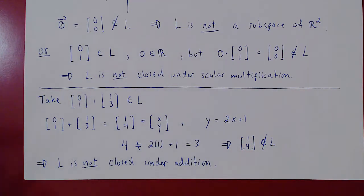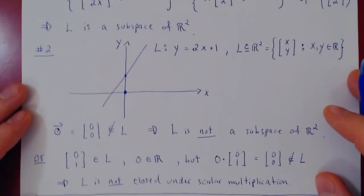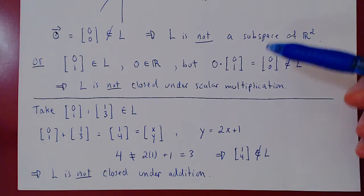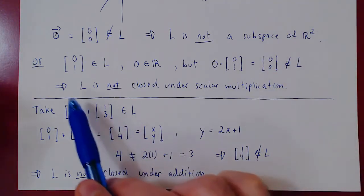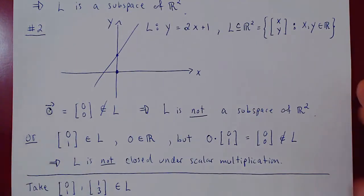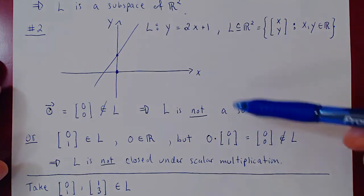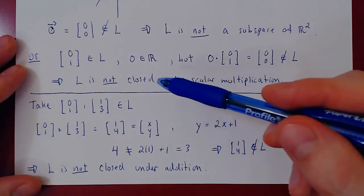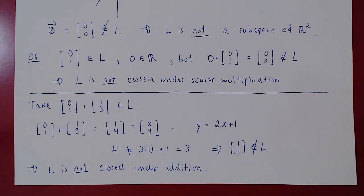In this case, both closure axioms failed. Keep in mind, I showed both failing just to give examples of how to construct counter-examples for closure under scalar multiplication and closure under addition. But remember: whenever you're trying to prove that something is a vector space using the subspace theorem, as soon as one axiom is not satisfied, you can stop — the set is automatically not a subspace of the larger vector space.